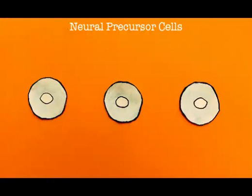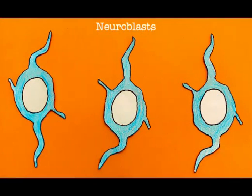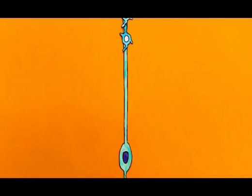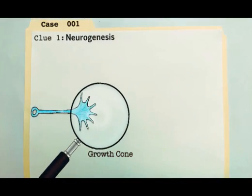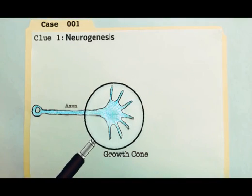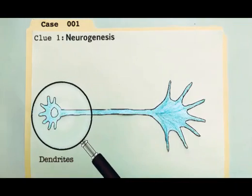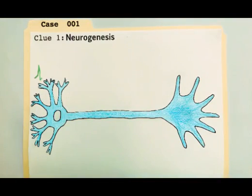First, neural precursor cells become neuroblasts, which are kind of like baby neurons. Then, they travel up a radioglial cell to where they're needed. Soon, a structure called a growth cone grows at the tip and lengthens the axon by exploring its environment. Then, dendrites form, which are where nerve impulses are received.